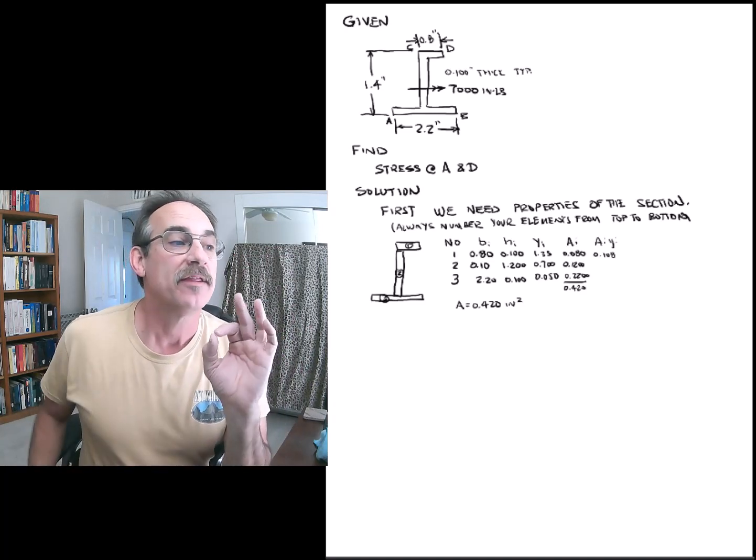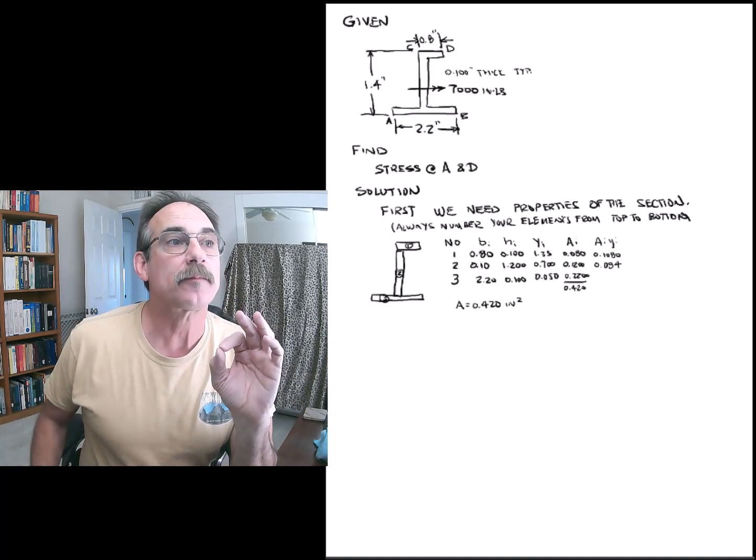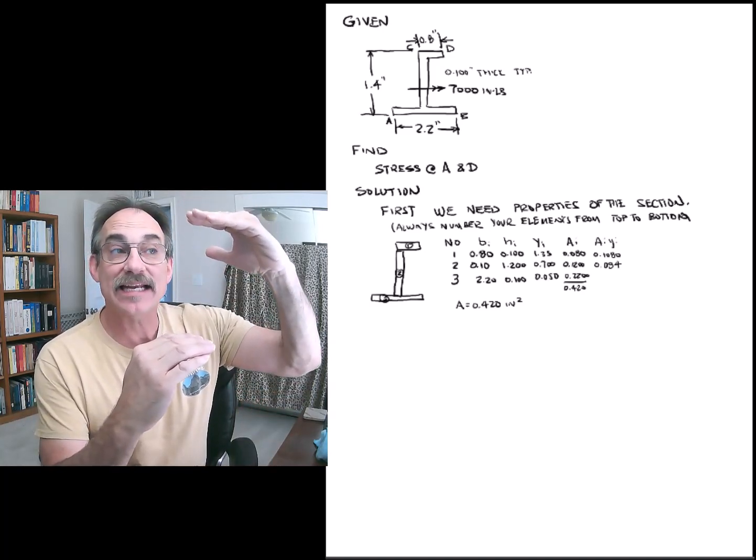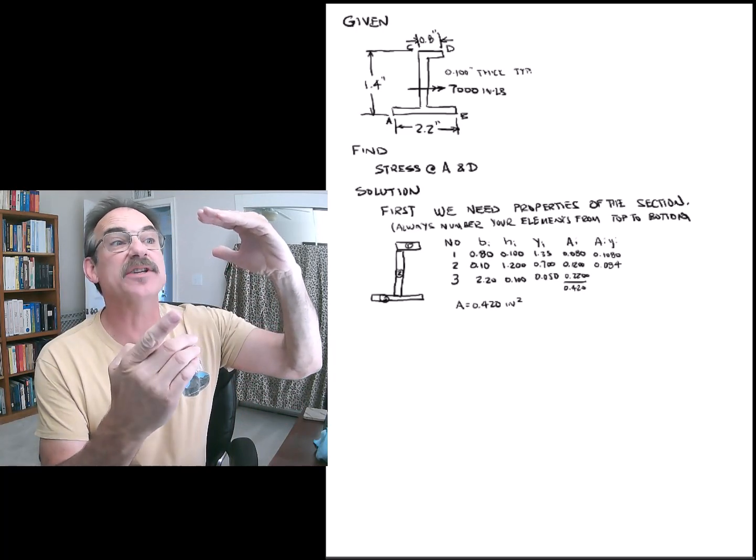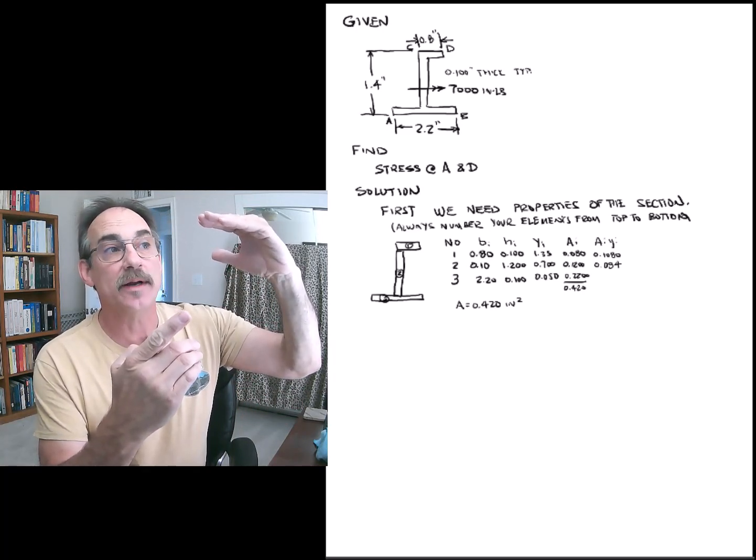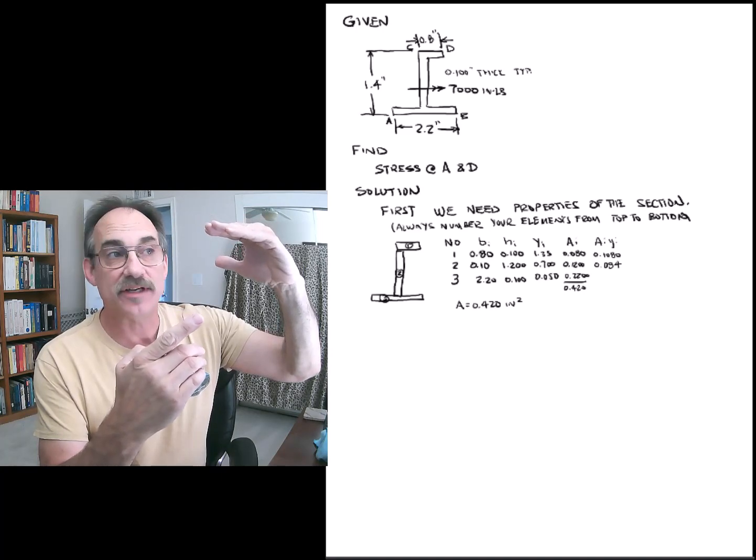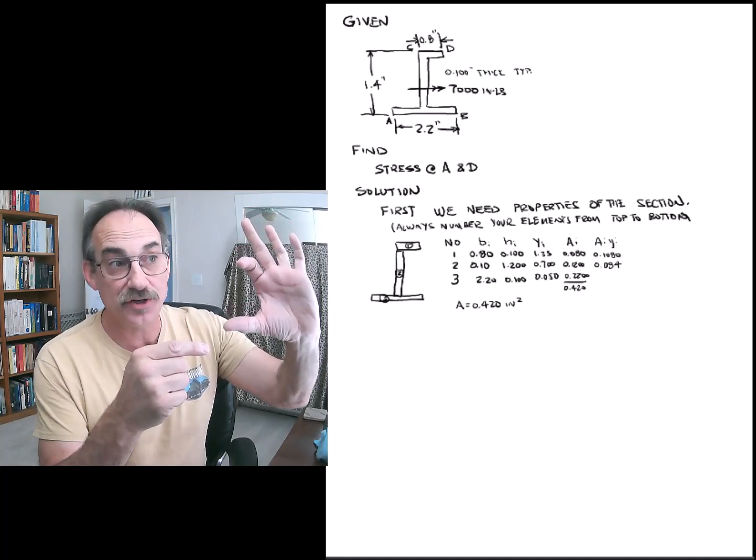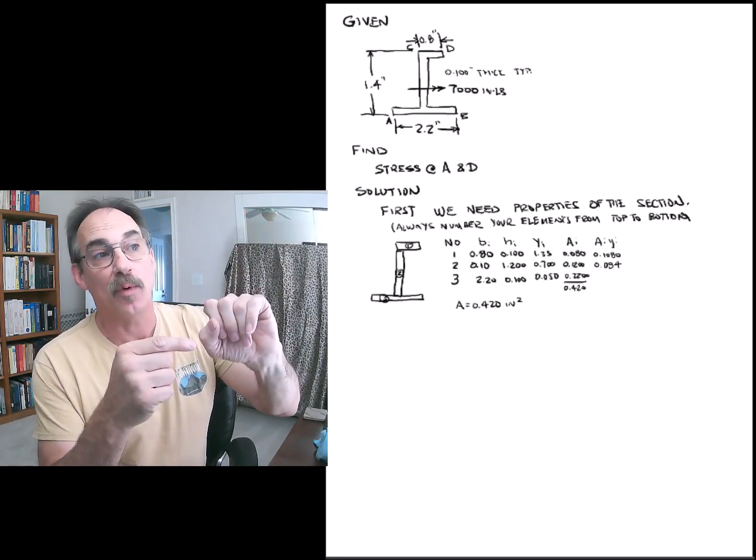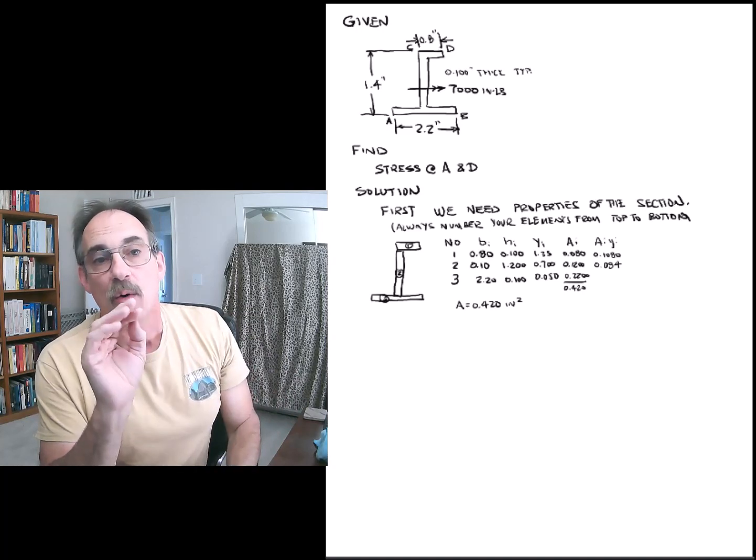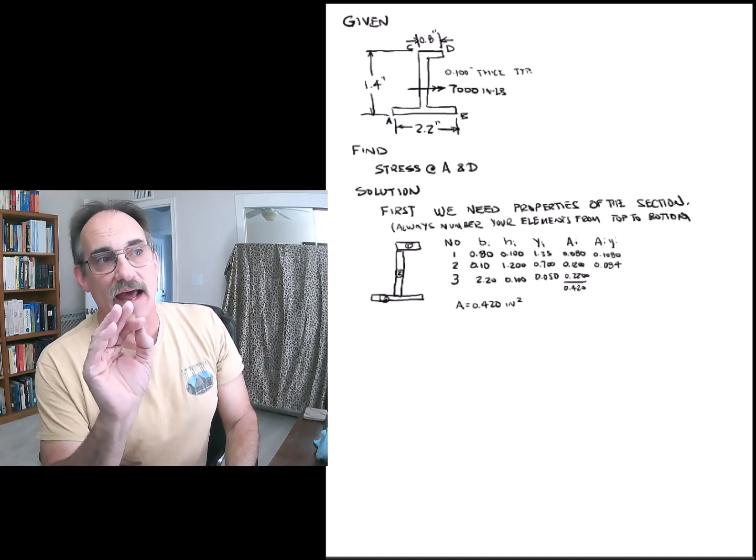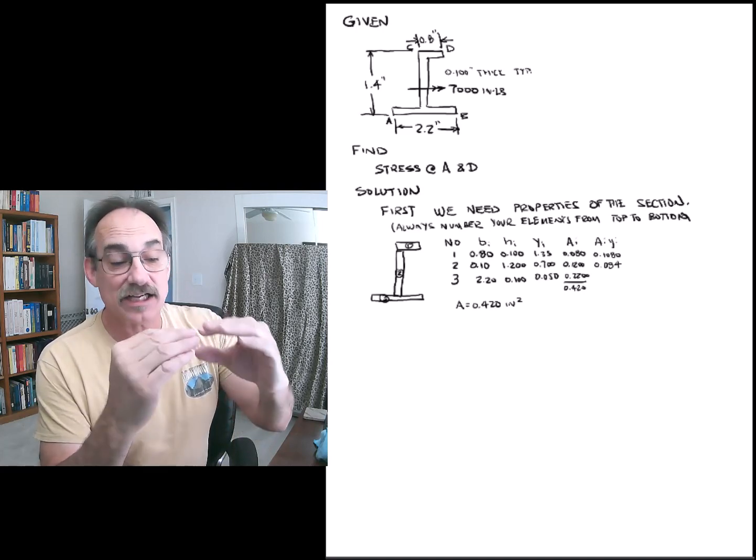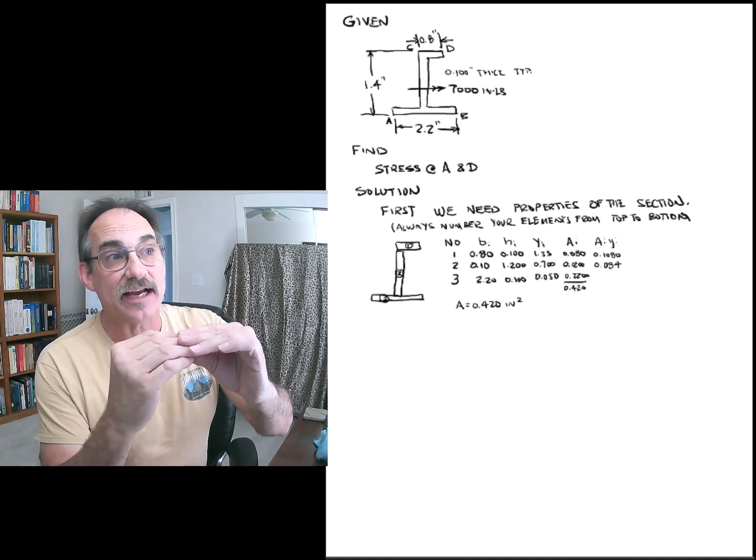Where is the Y bar? The first one is right there, at 1.4 to the top, minus half the thickness, 0.05 is 1.35. The next one is smack dab in the middle of the section. It's 0.1 plus 1.2 over 2, which happens to be 1.2 inches from the bottom. Our Y bar of that happens to be 0.7 inches from the bottom. Our Y bar of the last one is just 0.05, half its thickness.